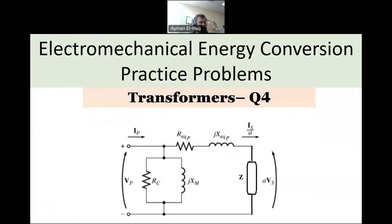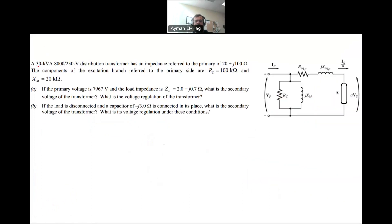Welcome back to the series of questions about energy converting devices. Here is our fourth question about transformers. In this question, it is a 30 kVA transformer — this is the rated S, the maximum amount of power we can transfer through the transformer. It's a step-down distribution transformer, stepping down the voltage from 8,000 to 230 volts.